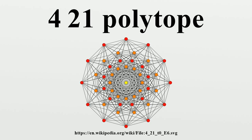These polytopes are part of a family of 255 (equals 2^8 minus 1) uniform 8-polytopes, made of uniform 7-polytope facets and vertex figures, defined by all permutations of one or more rings in the Coxeter-Dynkin diagram.